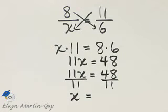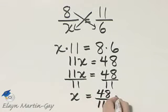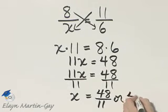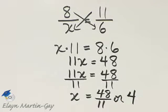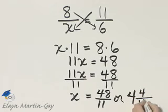Or you can write it as a mixed number. Let's write it as both. How many times does 11 go into 48? 11 goes into 48 four times. That's 44. So my difference or my remainder is 4.